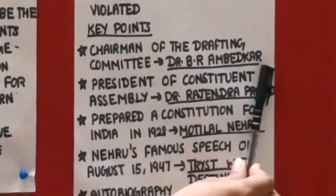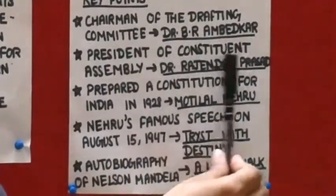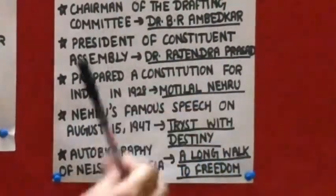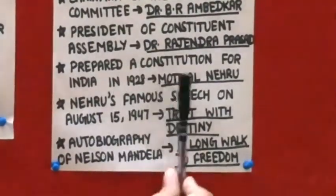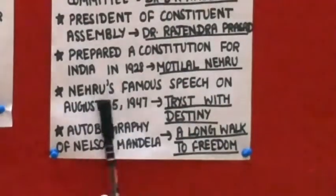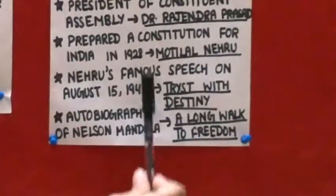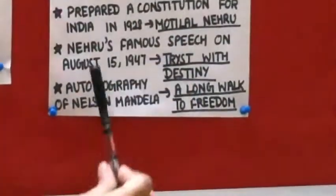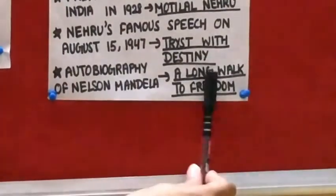That is why he is known as the father of our constitution. Who was the president of the constituent assembly? Dr. Rajendra Prasad. When was the first constitution for India prepared? It was prepared in 1928 by Motilal Nehru. Nehru's famous speech on August 15, 1947 — what is it called? It is called 'Tryst with Destiny.' And what is the name of the autobiography of Nelson Mandela? A Long Walk to Freedom.